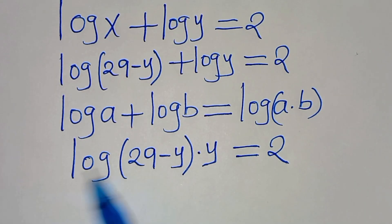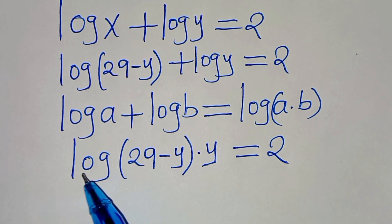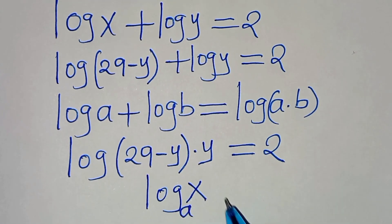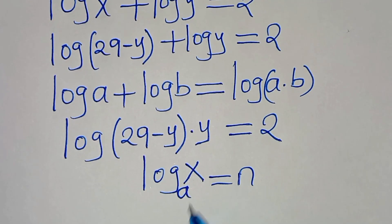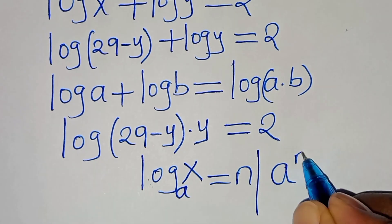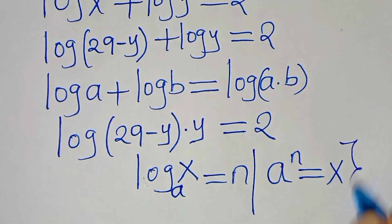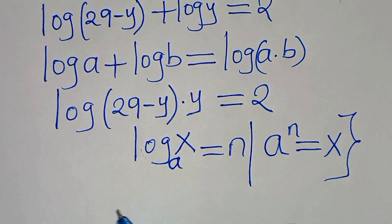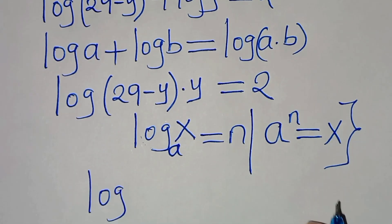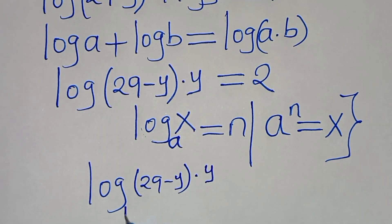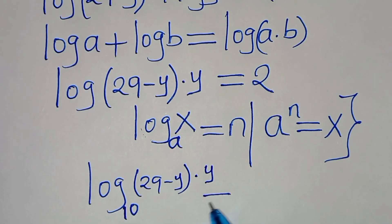Remember this is log base 10, so we can transform this logarithmic notation into index notation. If we have log x to base a equals n, then we can change this into index notation as: a to the power of n equals x. Now let's apply this property. Here we have log base 10 of [(29 minus y) times y] equals 2.